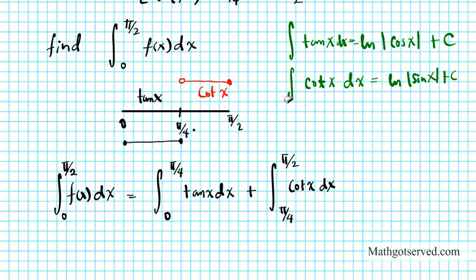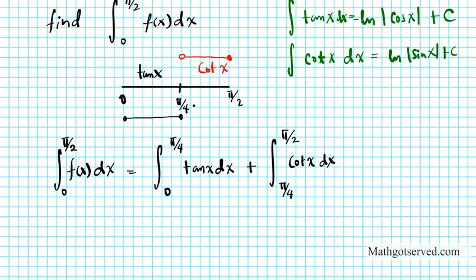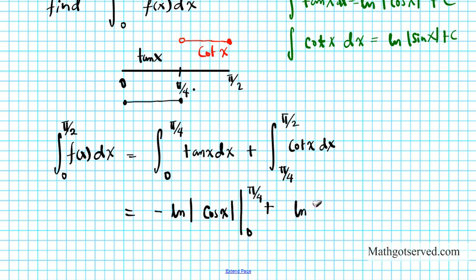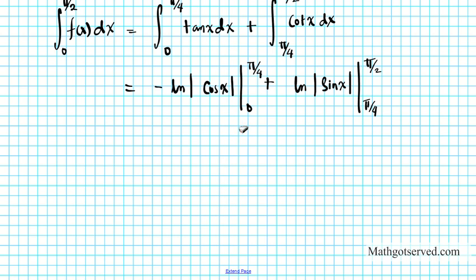What is the antiderivative of tan x? We have the formula: negative the natural logarithm of the absolute value of cosine x. So we'll have negative the natural logarithm of the absolute value of cosine x evaluated from 0 to pi over 4, plus the natural logarithm of the absolute value of sine x evaluated from pi over 4 to pi over 2. These are what we're going to evaluate.